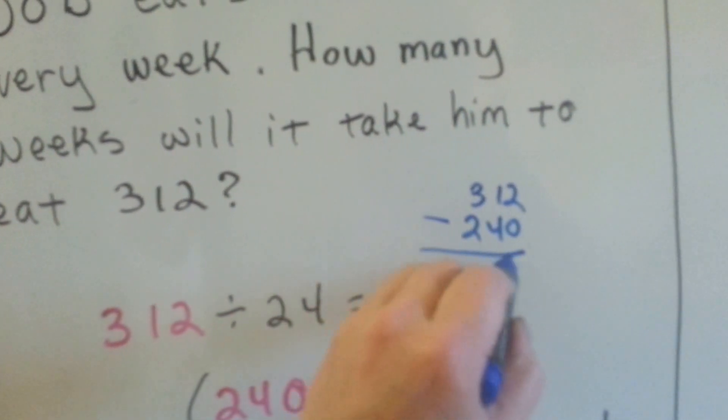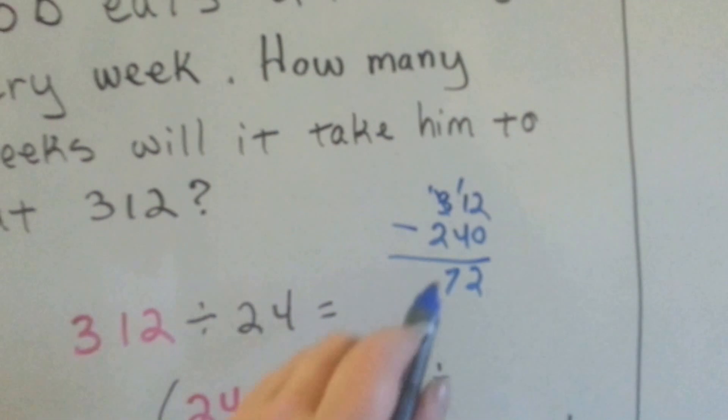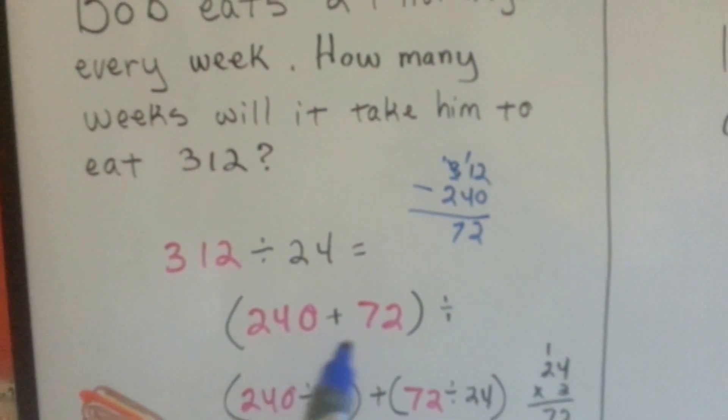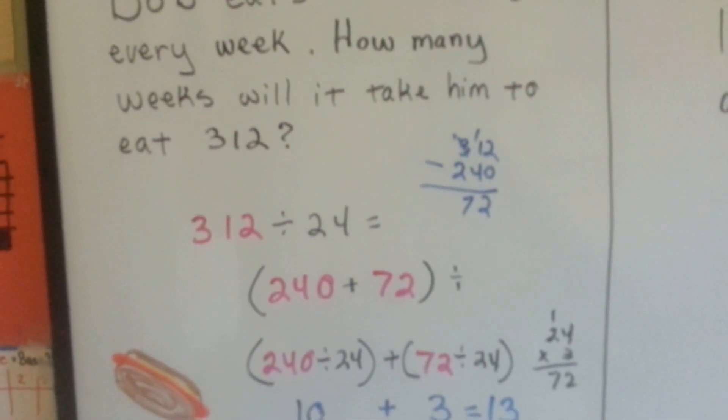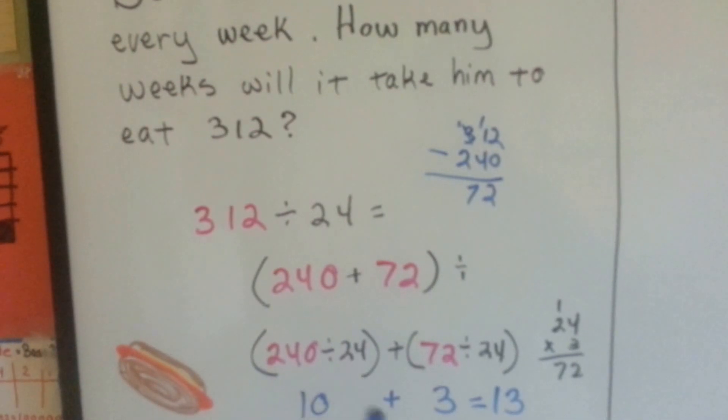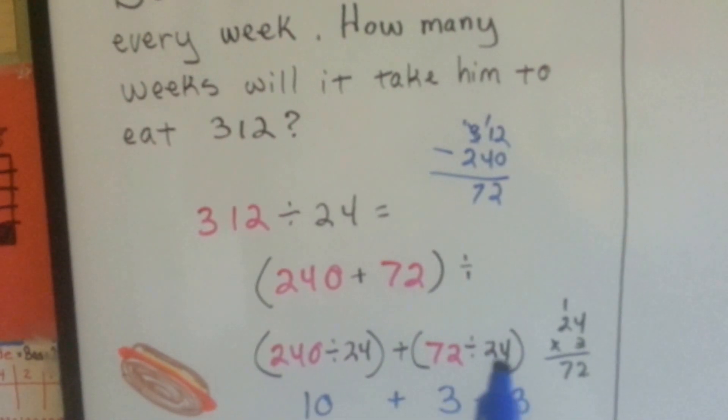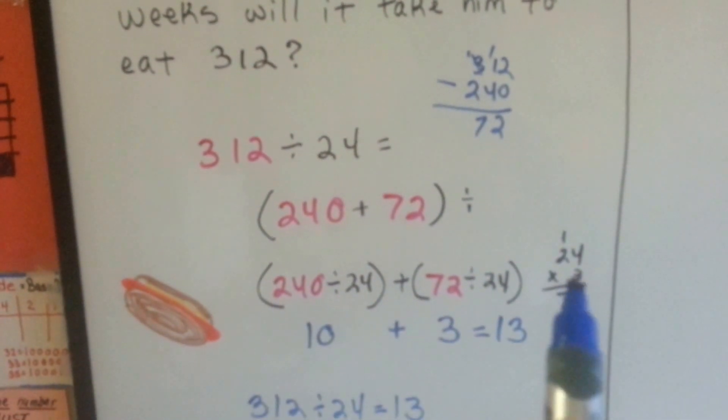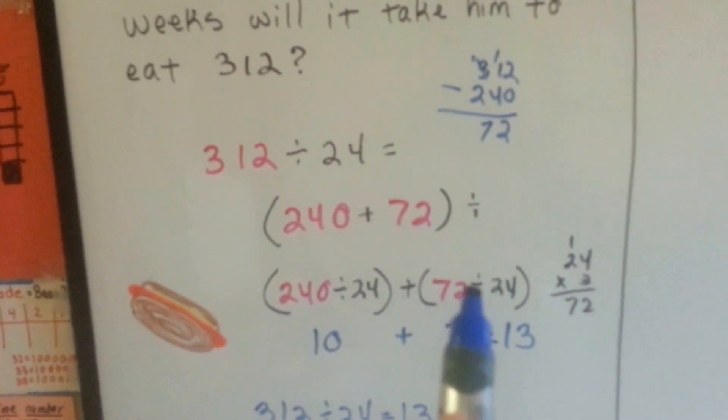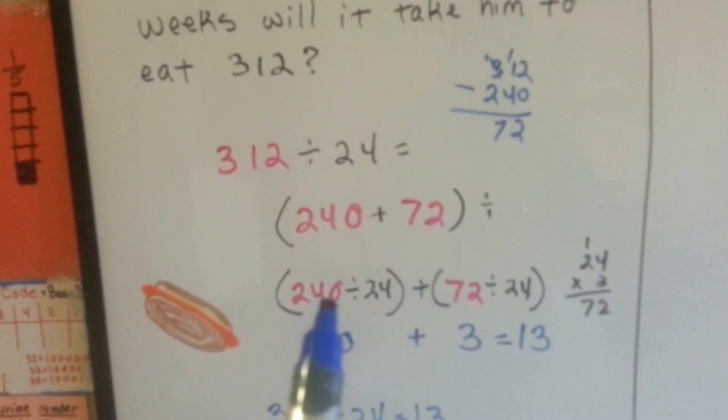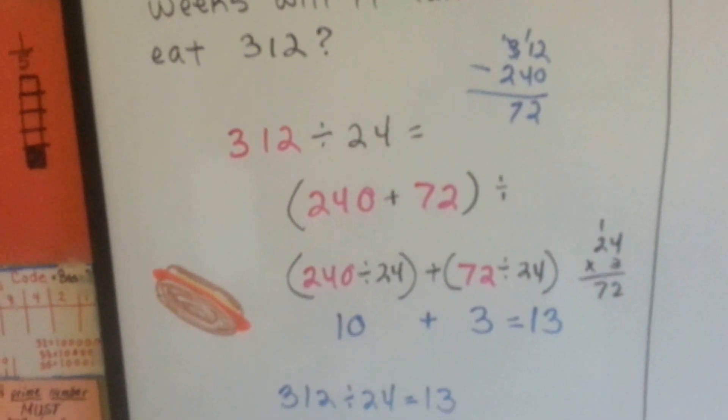That tells us how much we have left to divide. So now we have 240 plus 72. So 240 divided by 24 plus 72 divided by 24. 24 times 3 is 72, so I know that one's 3. And I knew that one was 10 because that was an easy one. So we have 10 plus 3 is 13.